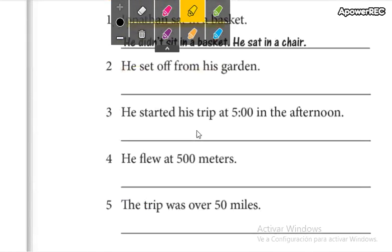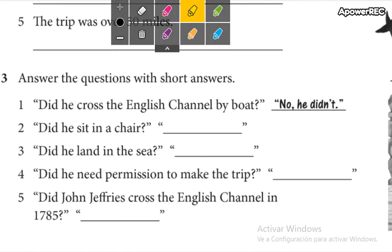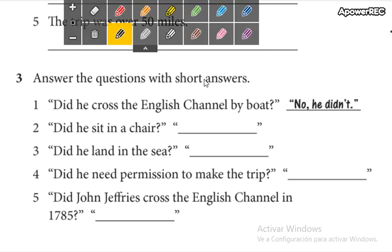Now, on the next part. Three. Answer the questions with short answers. Todas son de yes, no questions. Entonces dicen yes or no. El pronombre y luego el auxiliar. Negative or didn't. And if this is yes, you use the auxiliary did.